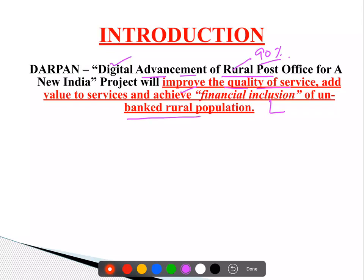जहाँ पे banks नहीं हैं, जिन rural areas में, but post offices हैं, वहाँ पे हम financial inclusion कर सकते हैं, और जो banking facilities हैं, they can be provided by the rural post offices, and in a better way, अगर हम उनको digitally empower कर दें.